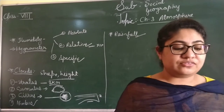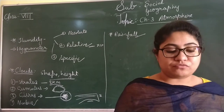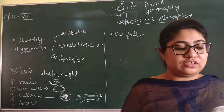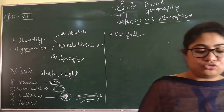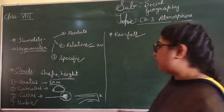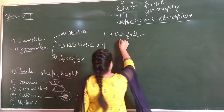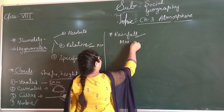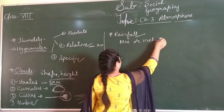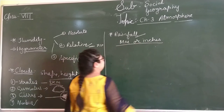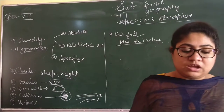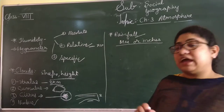Now we come to rainfall. Rainfall is precipitation in the form of water droplets. The total amount of rain received in a given area during a given time is measured by the rain gauge. Normally rain is measured in centimetres or inches in a particular time period and a particular area.